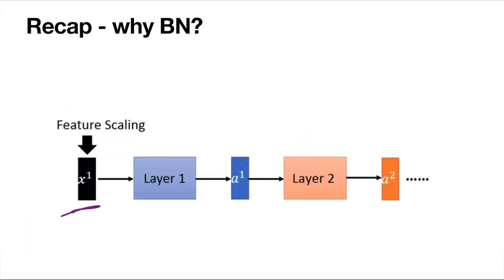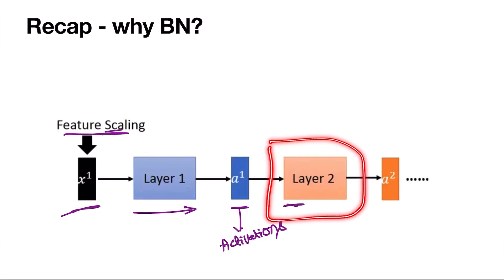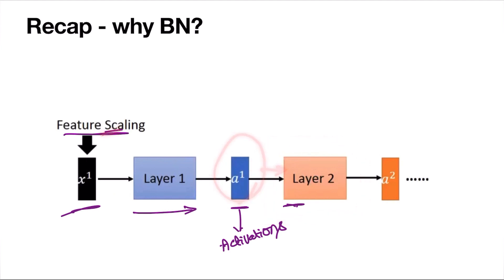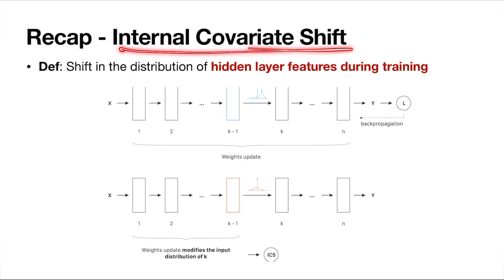We normalize the inputs, but the activations passing between intermediate layers are not normalized. For a second layer, those activations are the actual inputs — and if those also have unnormalized distributions, the layer struggles to learn. The activations keep changing if you don't normalize them. That is what internal covariate shift is — the distribution of hidden layer outputs changes across iterations.